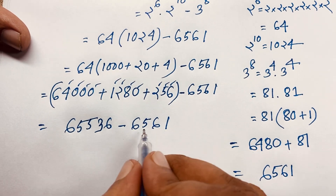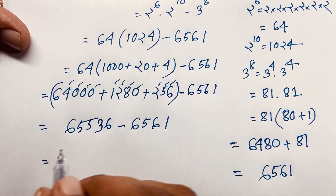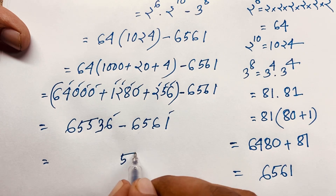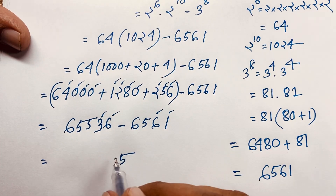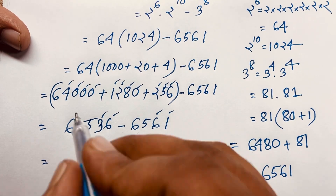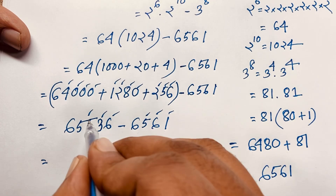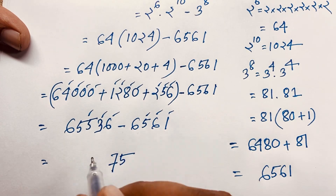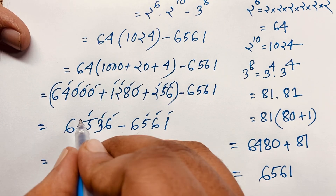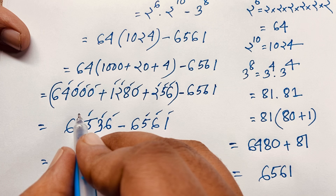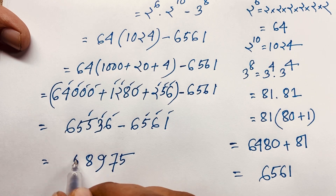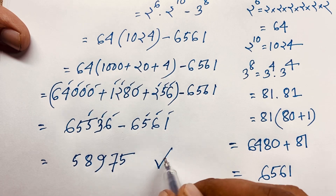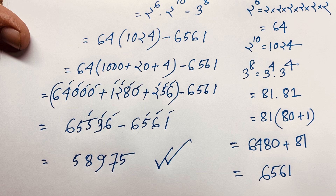Now, subtracting: 65536 minus 6561. We get 6 minus 1 is 5, 3 minus 6 becomes 13 minus 6 is 7, 14 minus 5 is 9, and 8 minus 0 is 8. So we find 58975. This is our final answer to this math olympiad question.